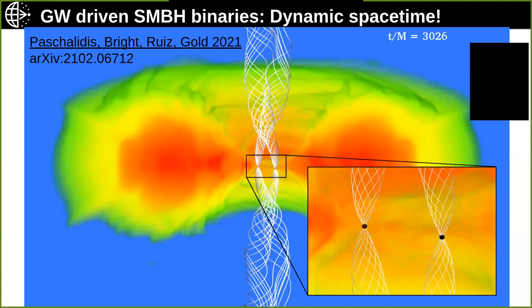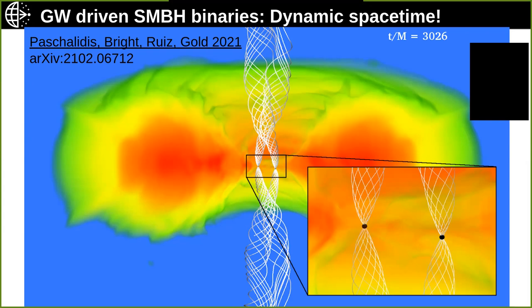This is a 3D rendering of a full general-relativistic accreting supermassive black hole binary simulation — solving Einstein's field equations in the dynamical spacetime regime with an accreting turbulent magnetized disk. The black holes are resolved objects on the computational grid, which is a crucial point that Newtonian or perturbative GR studies miss. This is the kind of physics you want to resolve: how magnetic field lines, shown in white, are anchored on the black hole horizons, giving rise to interesting jet morphologies.